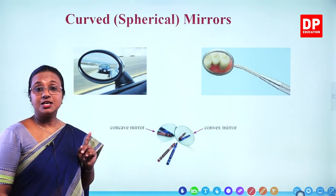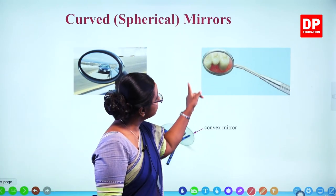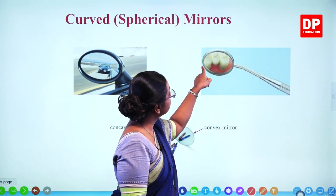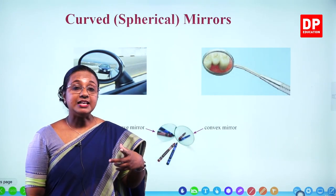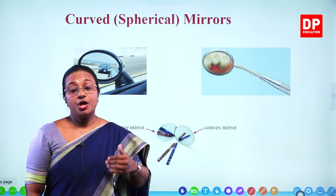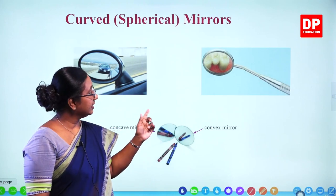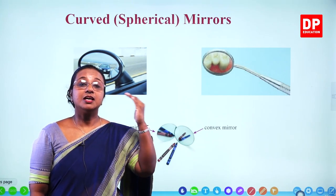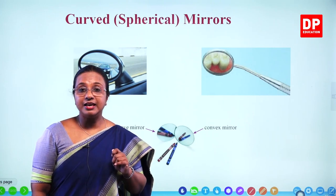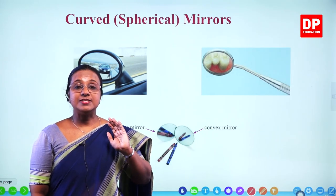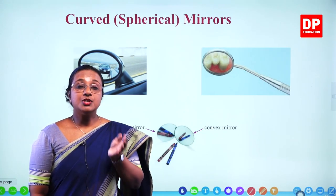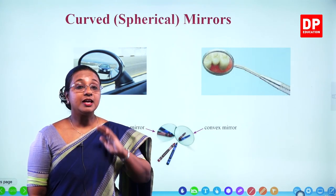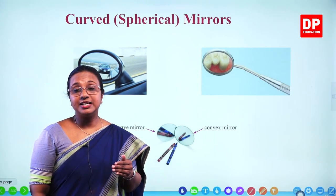There you see the diminished image. In this other picture, you can see this is used by a dentist to observe the teeth. Here the teeth look larger than the real teeth — that is, the image is enlarged. To observe enlarged images like this, we can use a concave mirror.